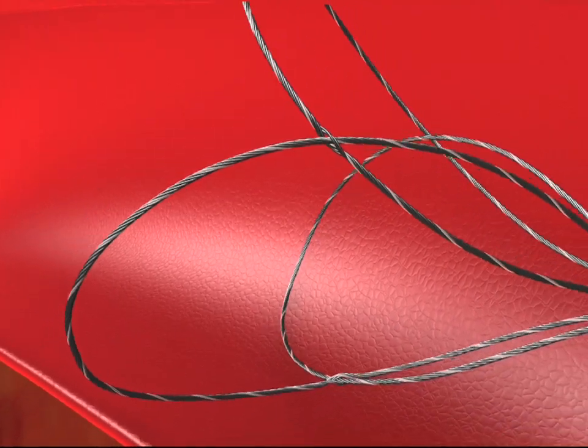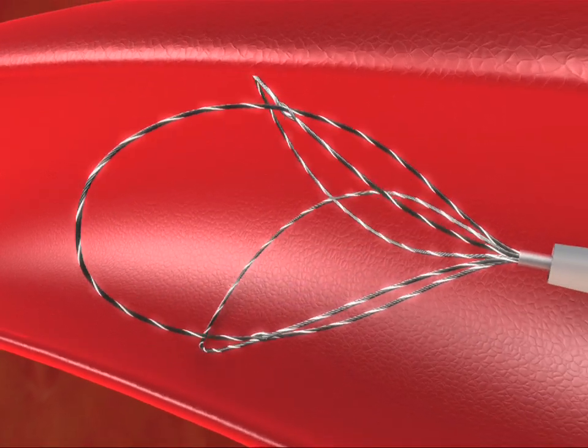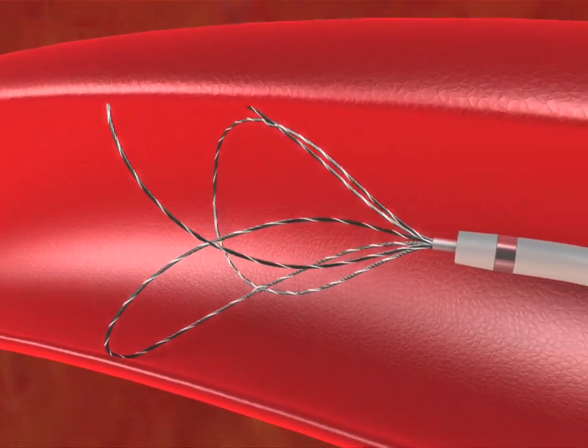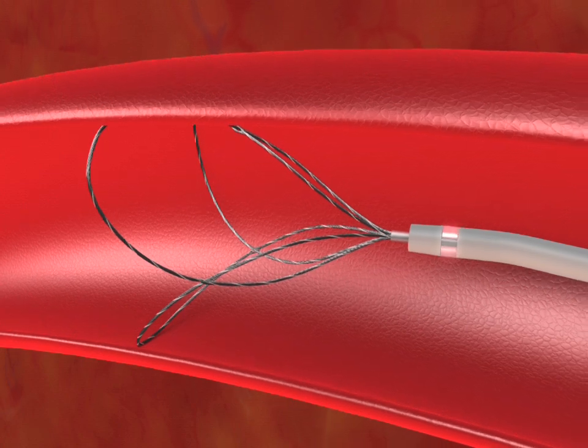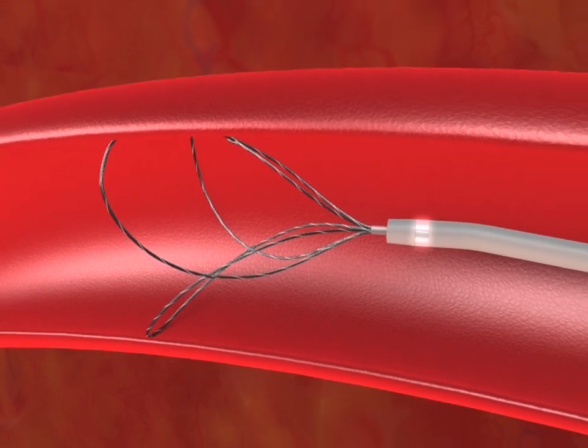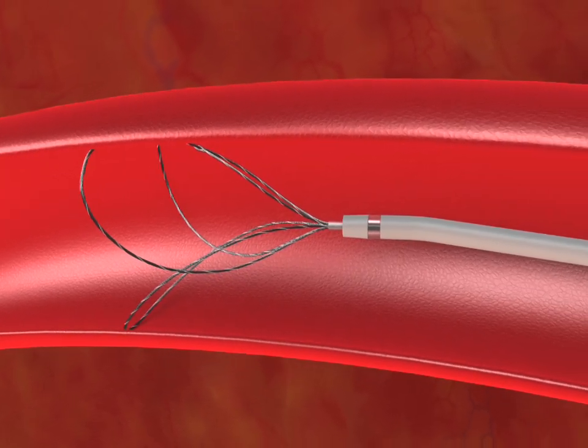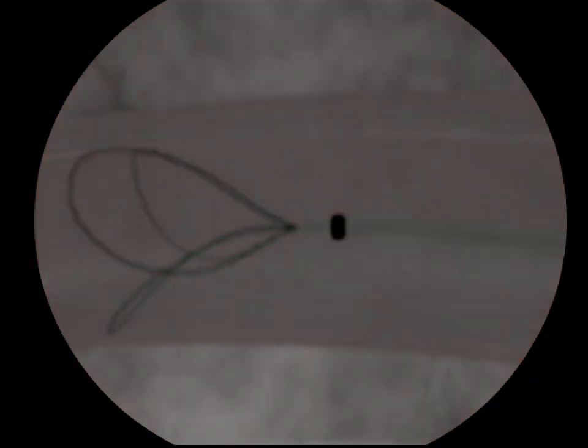Excellent fluoroscopic visualization is provided by platinum strands that are incorporated into the snare loops, and a radiopaque band is also added to the N-Snare kink resistant guiding catheter to ensure easy visibility during fluoroscopy.